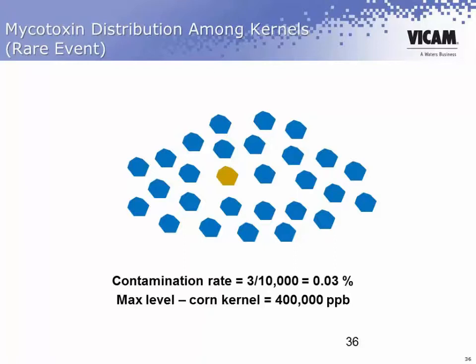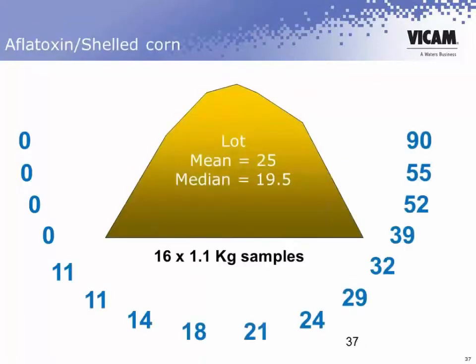So if you look at the concentration on a single kernel, it could be as high as 400,000 ppb. That explains why we can see this kind of variability in a lot, depending on what sample — or number of samples — was looked at.